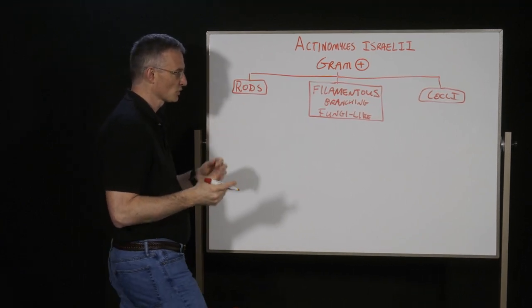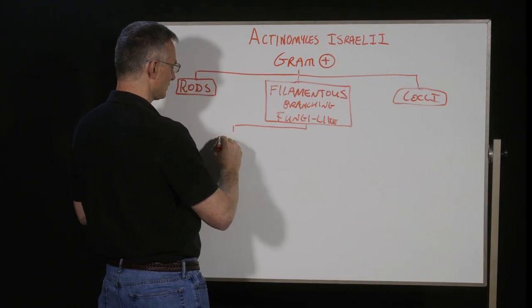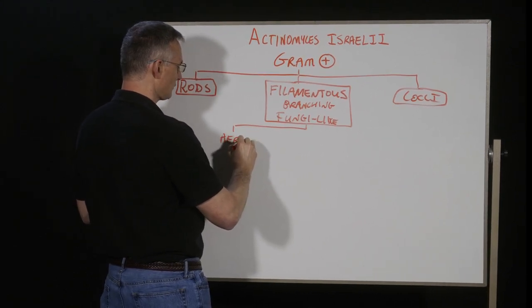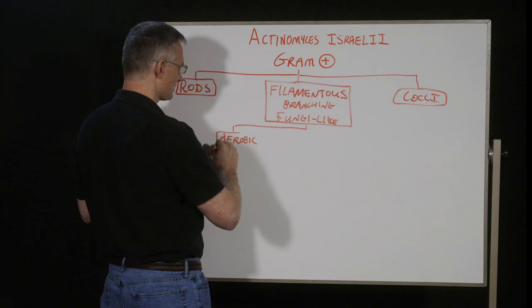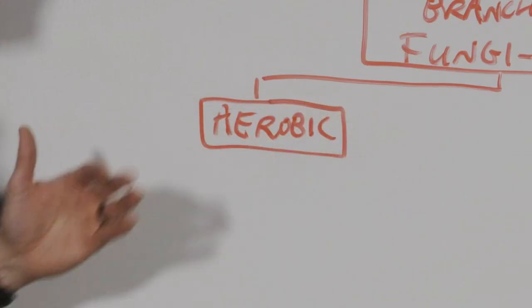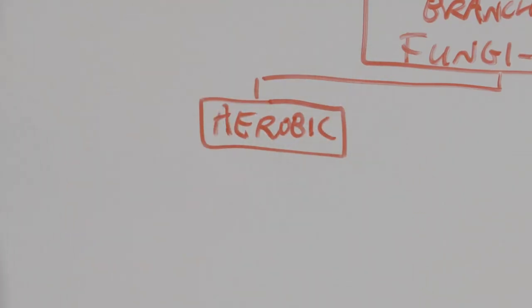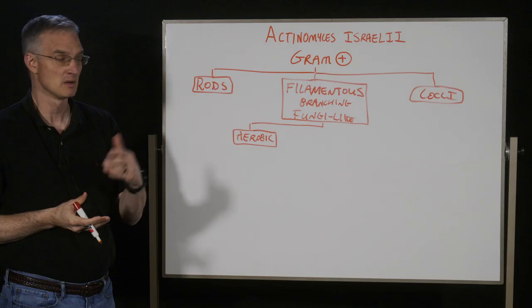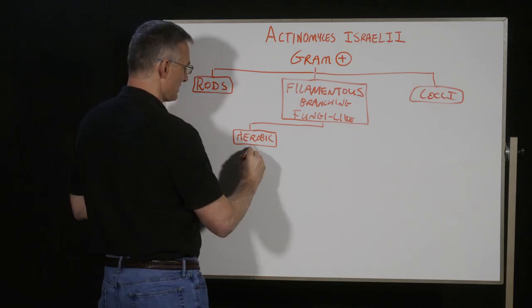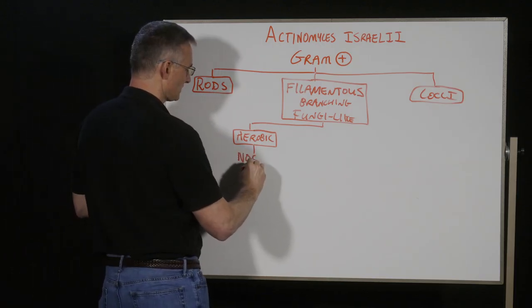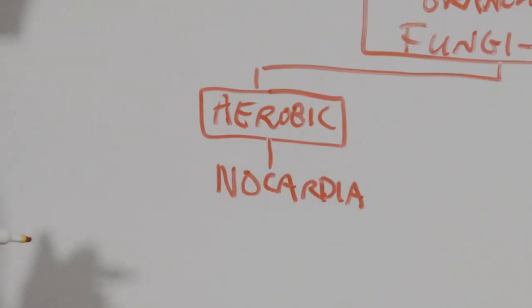Now, in board questions, there are typically only two main divisions here that we have to go through from this branch. And the first is going to be, does the question say it's an aerobic filamentous structure? Because if it's aerobic, then the main bug that it's going to tell you that it is, that's going to tell you that we're dealing with nocardia.